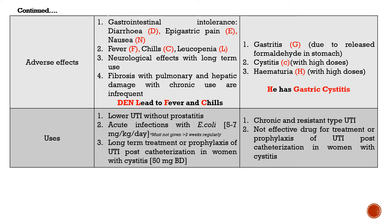Talking about adverse effects of Nitrofurantoin: gastrointestinal intolerance, diarrhea, epigastric pain, fever, chills, leucopenia, neurological effects, and long-term use effects. A mnemonic for these is 'then lead to fever and chills.' For Methenamine, adverse effects include gastritis due to release of formaldehyde in the stomach, and cystitis and hematuria related to high doses only. Its mnemonic is 'he has gastric cystitis.'